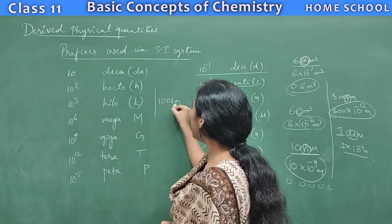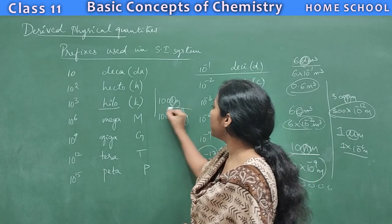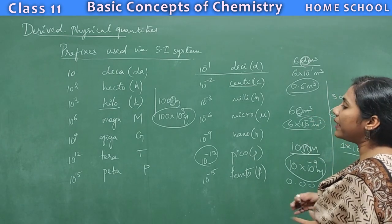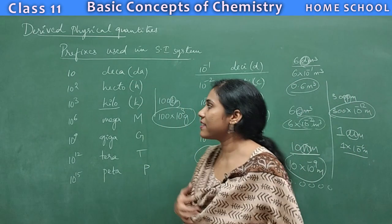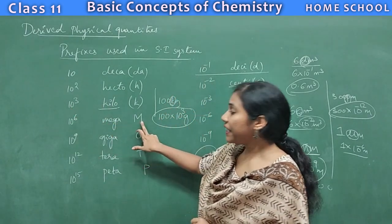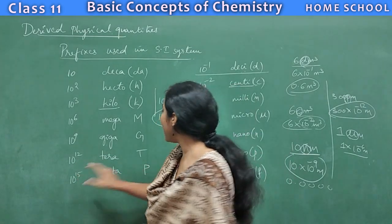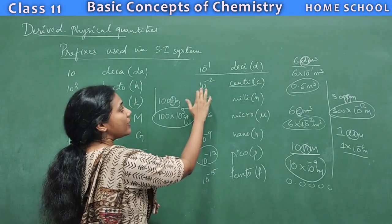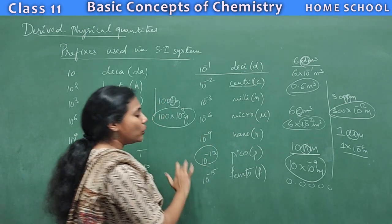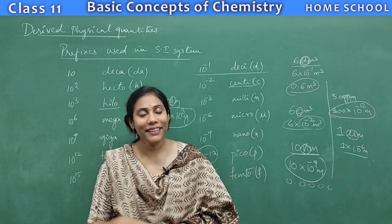Say 100 kg — k means kilo, which is 10³, so 100 kg means 100 × 10³ grams. Such big or small numbers can be indicated with prefixes. Hecto is 10², kilo is 10³, mega (capital M) is 10⁶, giga is 10⁹, tera is 10¹², peta is 10¹⁵. On the other side: deci is 10⁻¹, centi is 10⁻², milli is 10⁻³, micro is 10⁻⁶, nano is 10⁻⁹, pico is 10⁻¹², femto is 10⁻¹⁵. These meanings are very important to understand.